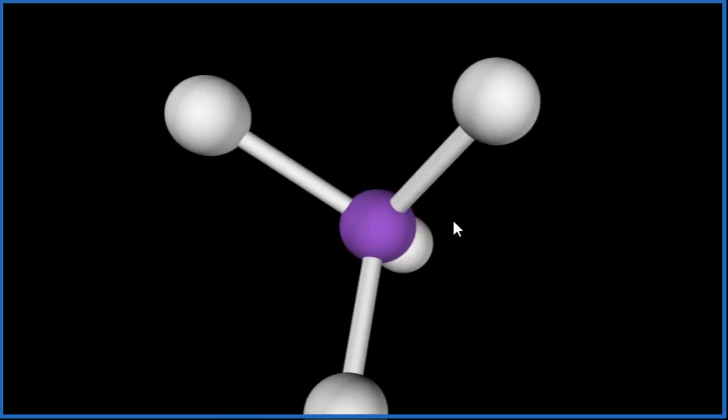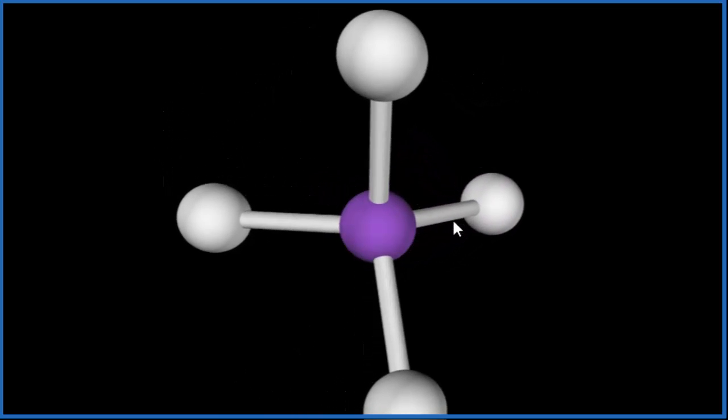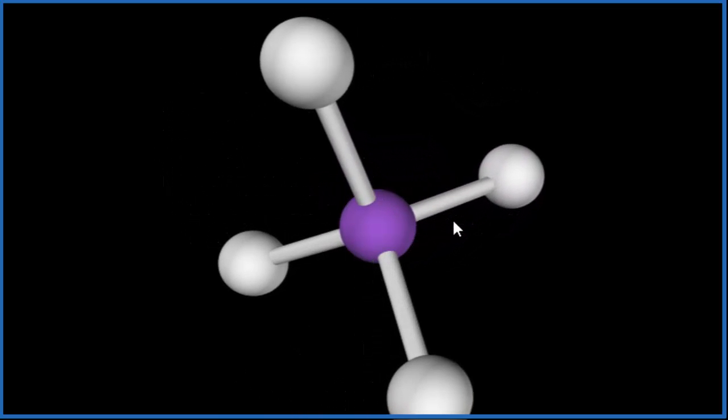So the molecular geometry for SiF4 is tetrahedral. And if you look at the electron geometry, since there's no lone pairs, the electron geometry is also tetrahedral. Let's go back to our Lewis structure.